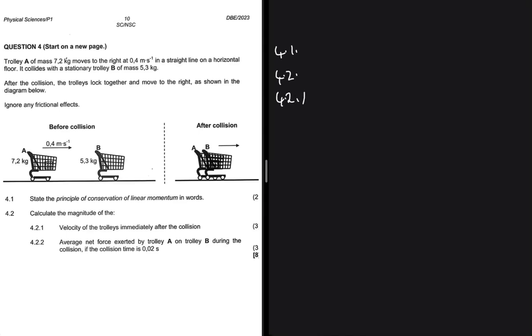So let's go ahead and do 4.2 and see what is happening here. The first question, 4.2.1, calculate the magnitude of the velocity of the trolleys immediately after the collision. Based on the principle of conservation of linear momentum, we know that the sum of the momentum before should be equal to the sum of the momentum after if that system is isolated.